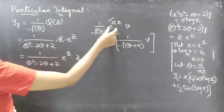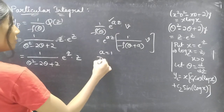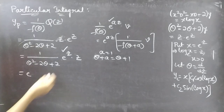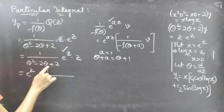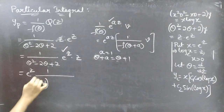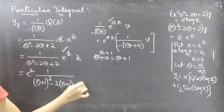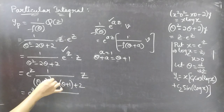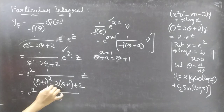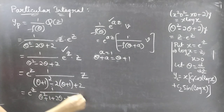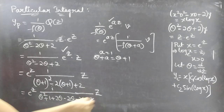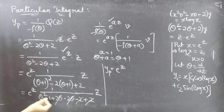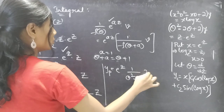With a equals 1, we replace theta by theta plus 1. So yp equals e to the z times 1 over (theta plus 1) squared minus 2(theta plus 1) plus 2, applied to z. Expanding (theta plus 1) squared gives theta squared plus 2 theta plus 1. After simplification, the terms minus 2 plus 2 cancel and 2 theta minus 2 theta cancels, leaving e to the z times 1 over (theta squared plus 1) applied to z.